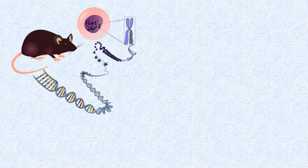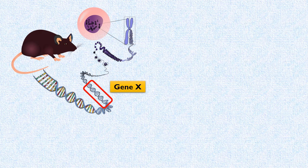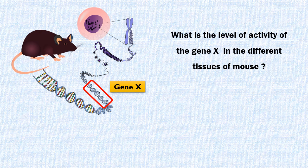Suppose gene X is present in the genomic DNA of a mouse. Now, we want to know how much active is this gene in different tissues of the mouse. Let's say, how much active is gene X in the cells of the liver, heart, and intestines of the mouse.